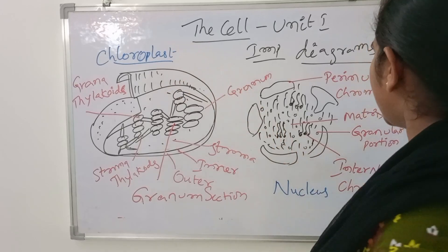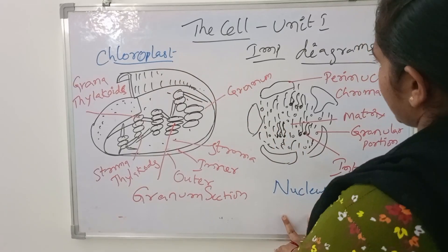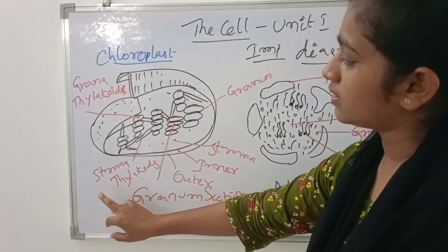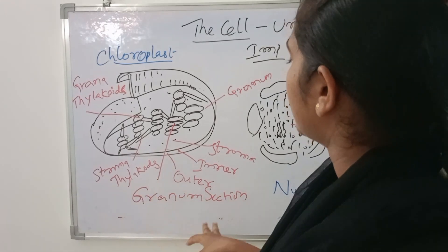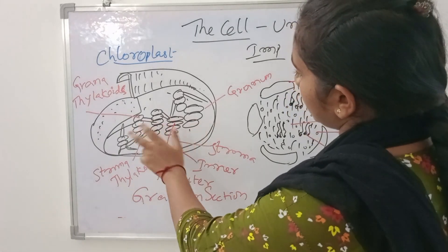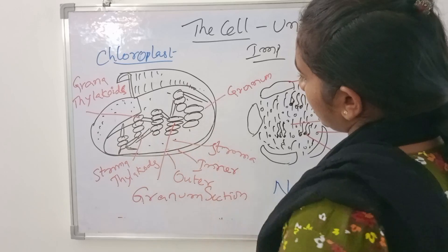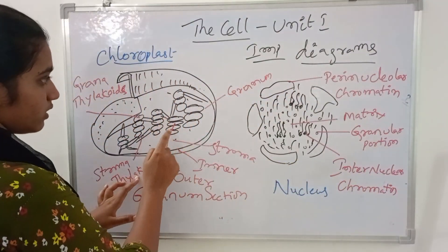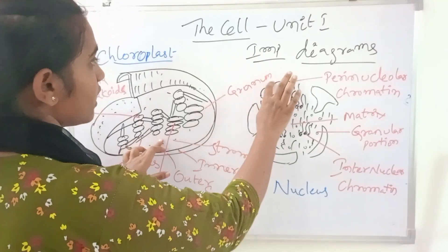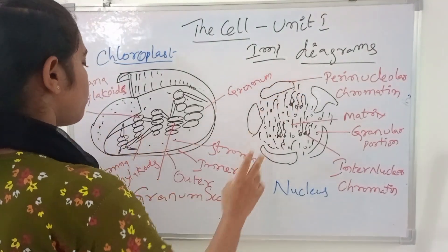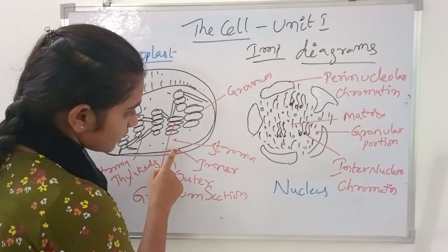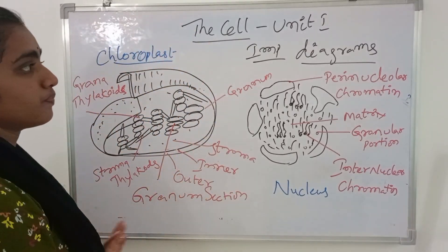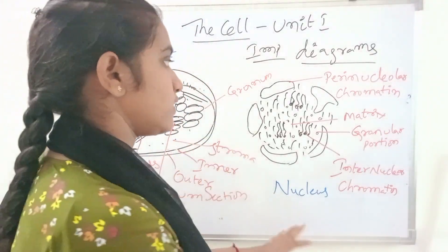Plastid structure and nucleus structure. Chloroplast has grana thylakoids and stroma thylakoids, along with a granule section. Inner and outer membranes. Chloroplast structure and nucleus.